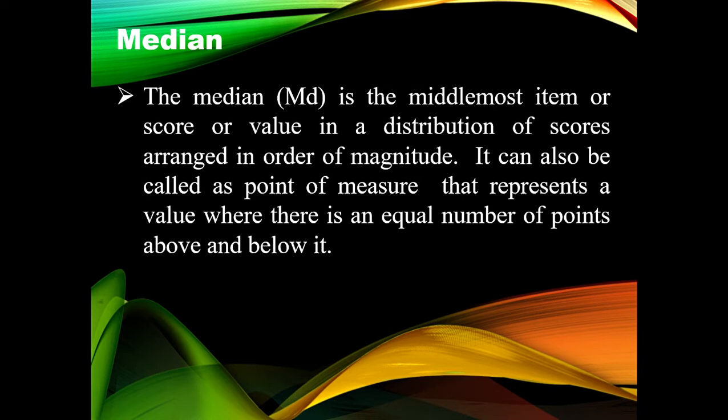Next is the median, or the MD, is the middlemost item for score or value in a distribution of scores, arranged in order of magnitude. It can also be called as point of measure that represents a value where there is an equal number of points above and below it.